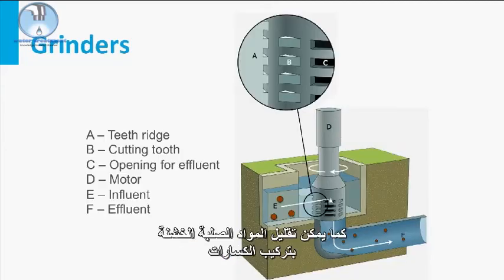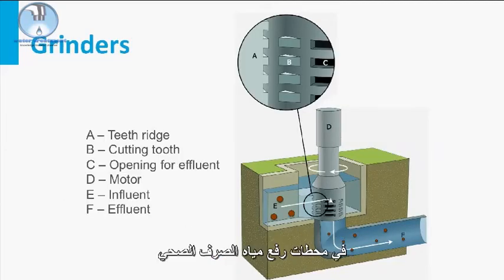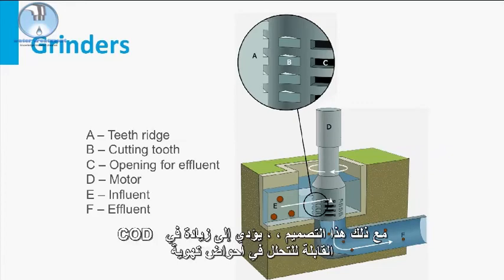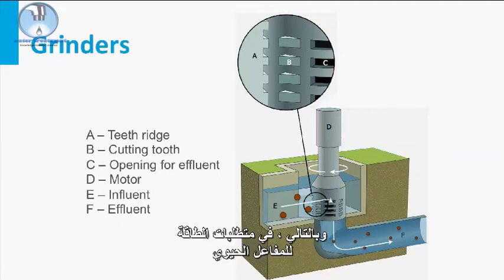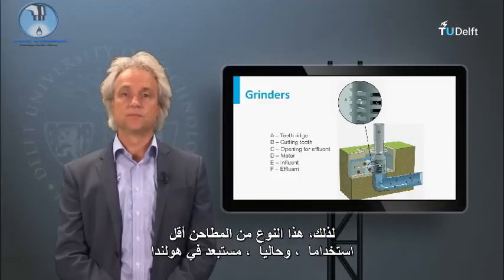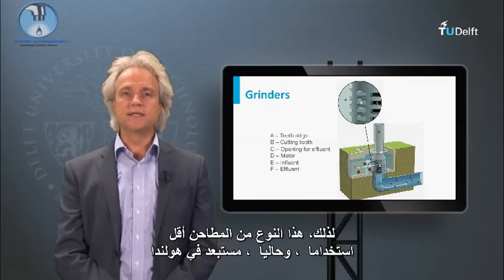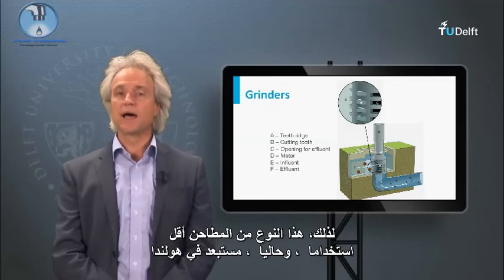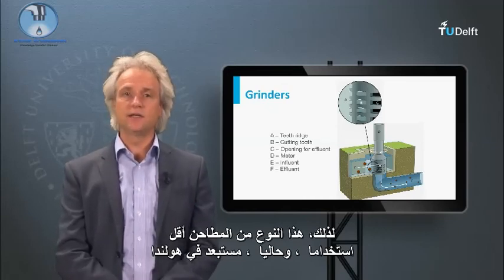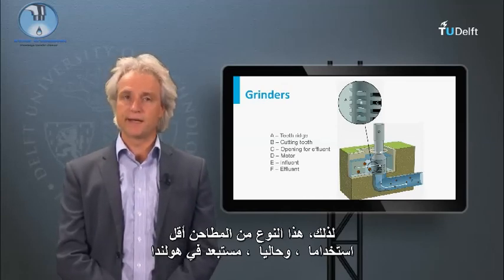Coarse solids reduction can also be obtained by the installation of grinders in combination with sewage pump stations. This approach, however, results in an increase in the biodegradable COD in the aeration tanks and thus in the energy requirement of the bioreactor. Therefore, these types of grinders are less and less used and have been eventually abandoned in the Netherlands.